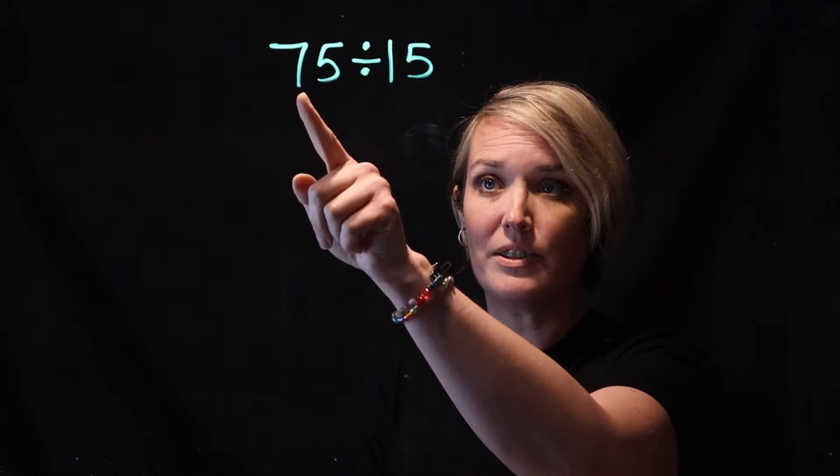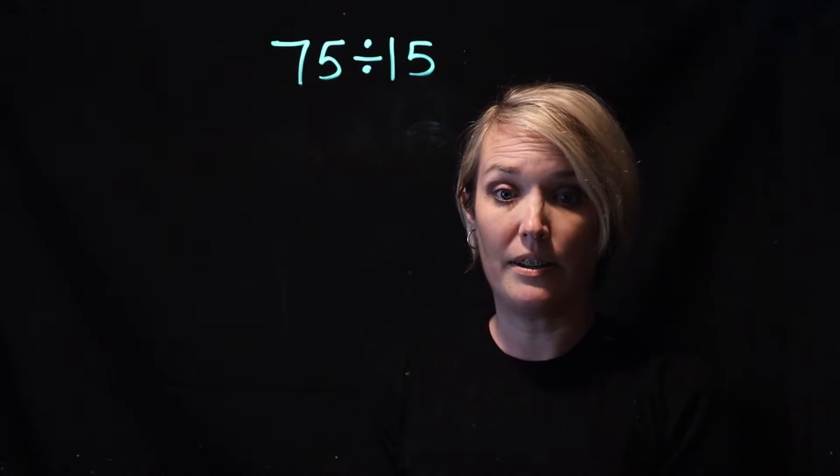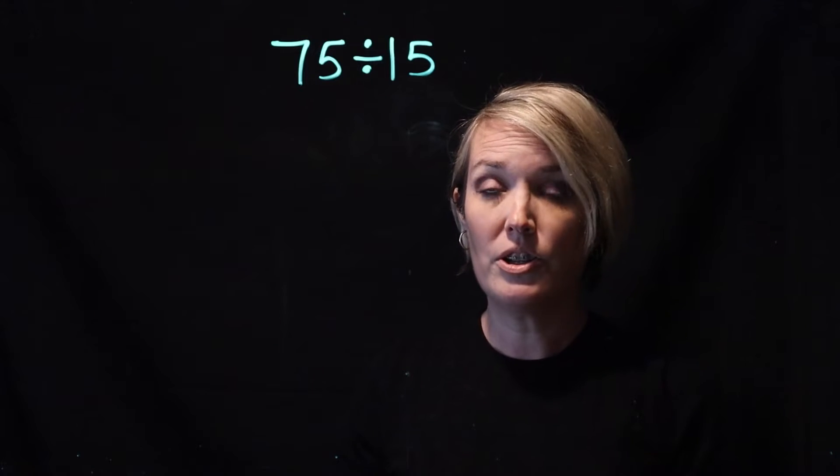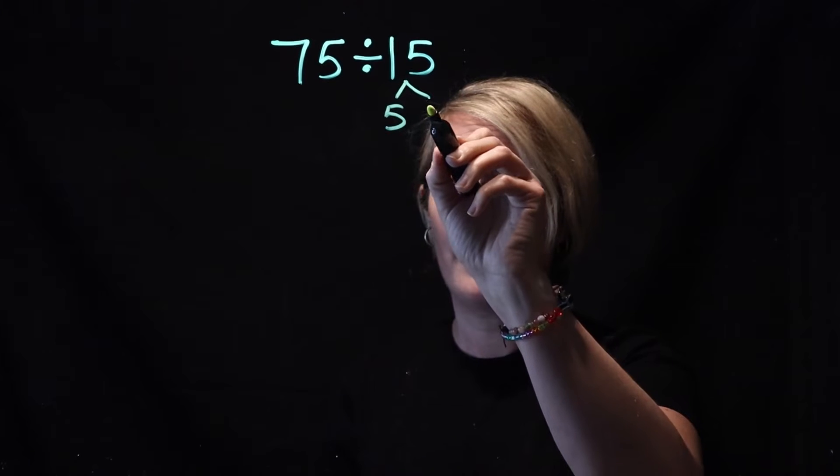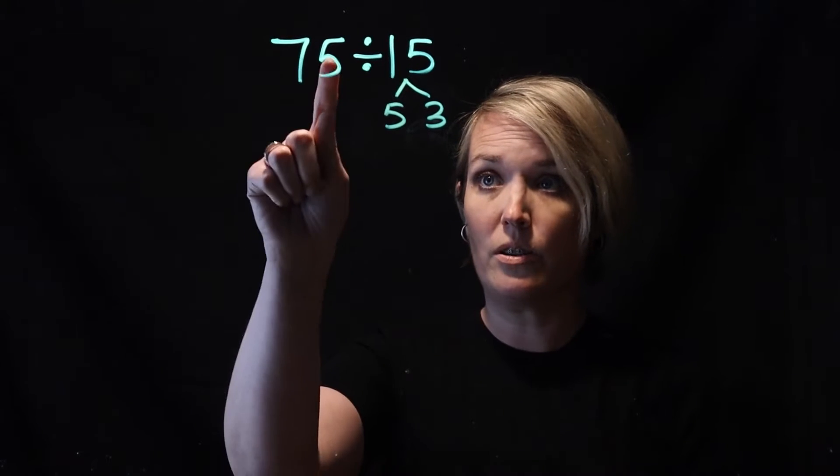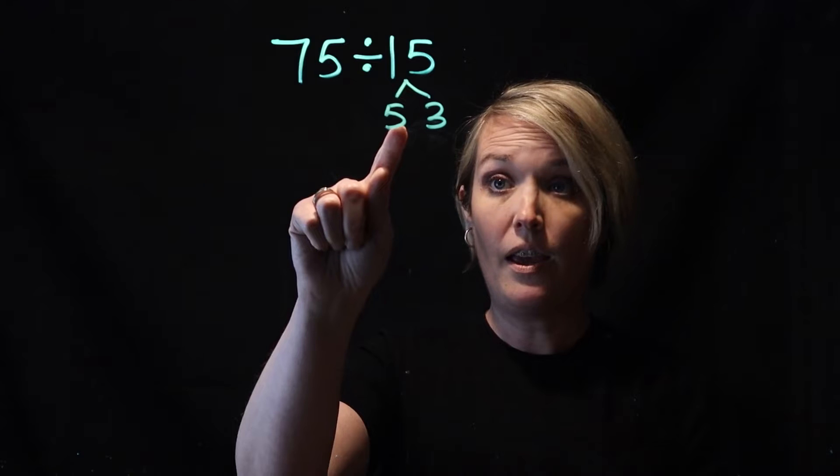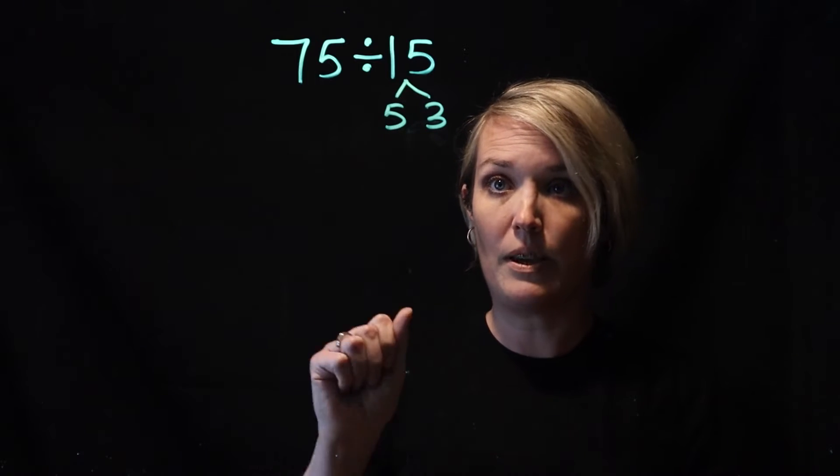Hi everyone. I was working with Azzy on 75 divided by 15, and she had some really good ideas on how to figure this out. First, she said she's going to split this 15 into 5 and 3, so she's going to do this in two steps. She's going to go 75 divided by 5, and then whatever she gets, she's going to divide that by 3.